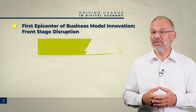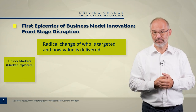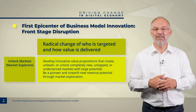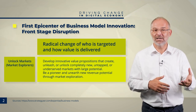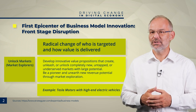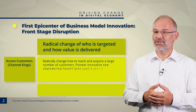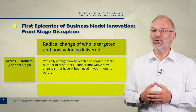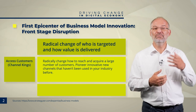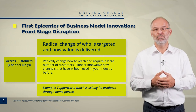The first epicenter is front stage disruption — a radical change of who is targeted and how value is delivered. Unlock markets: develop innovative value propositions that create, unleash or unlock completely new, untapped or underserved markets with large potential. Be a pioneer and unearth new revenue potentials through market exploration. An example is Tesla Motors with high-end electric vehicles. Access customers: radically change how to reach and acquire a large number of customers. Pioneer innovative new channels that haven't been used in your industry before. An example is Tupperware, which sold its products through home parties.